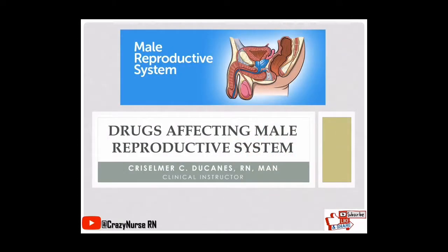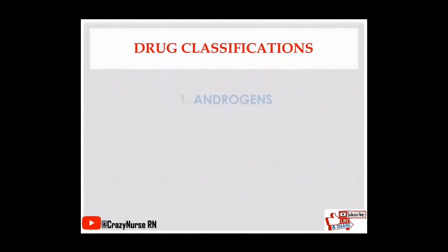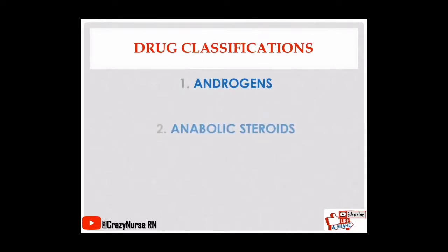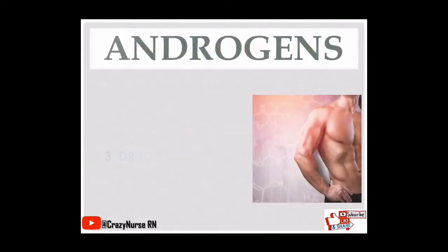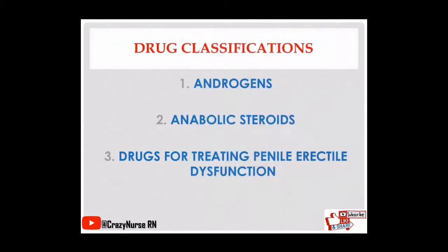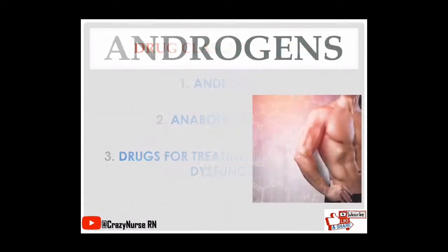Now we're done with the drugs affecting the female reproductive system. We will proceed to drugs affecting the male reproductive system. The drug classifications are: first, androgens; second, anabolic steroids; and third, drugs for treating penile erectile dysfunction. Let's start with androgens.